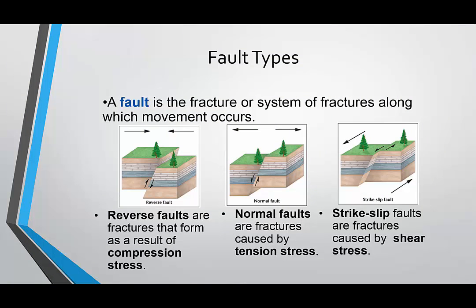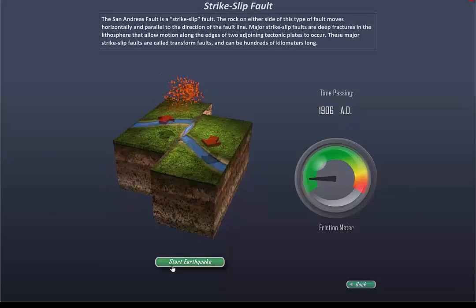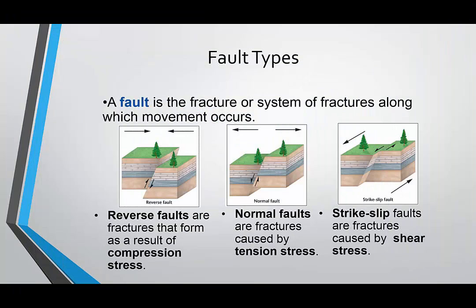A strike-slip fault is when the blocks are sliding past one another and can't hold that shear stress anymore. It's like scissors — the blades are moving past one another but not into one another. From last unit when we dealt with plate boundaries, these look similar but there is a big difference between a fault and plate boundaries. So you have the reverse, normal, and strike-slip.